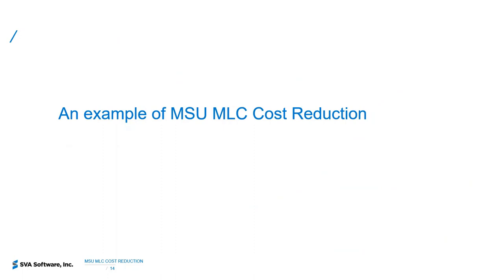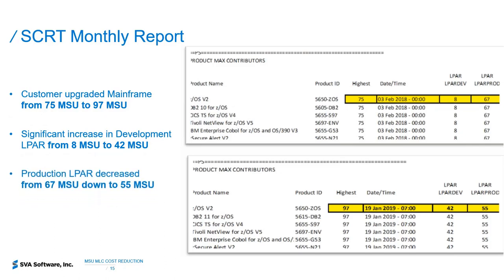Here's an actual example of a recent customer where we carried out an MSU MRC cost reduction exercise. Every customer situation is different — that's one of the values of the service offering, since we evaluate different customer situations and draw different conclusions. This particular customer had an SCRT report typically at 75 MSUs, then upgraded to a high-powered CPU model, after which the SCRT report jumped to 97 MSUs — an increase of 22 MSUs. This was totally unexpected, not projected, and not budgeted, creating a serious financial impact.